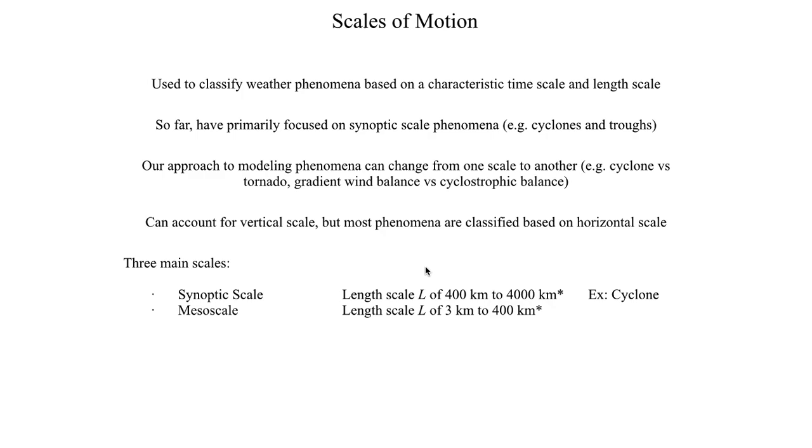Mesoscale typically classifies phenomena that have a width or size of three kilometers to 400 kilometers. A common example would be something like a squall line, which typically has a characteristic length scale of several hundred kilometers. Microscale is basically anything smaller than three kilometers in diameter, like a tornado, unless you have something as large as the El Reno tornado.